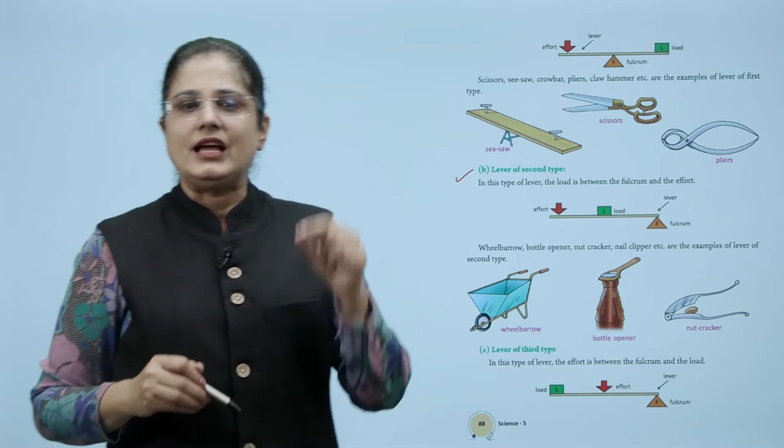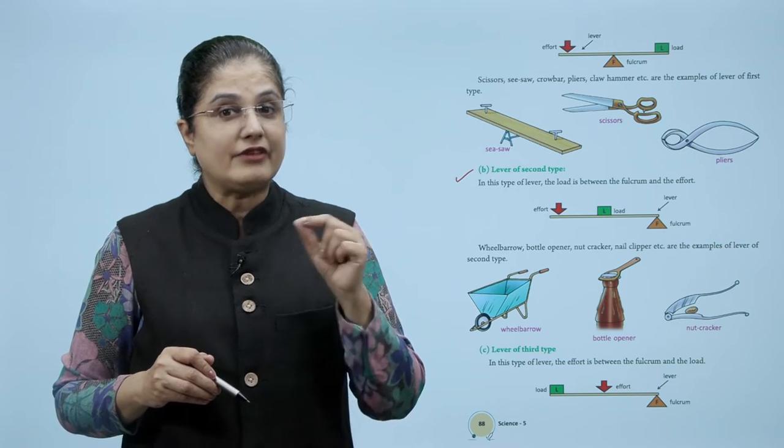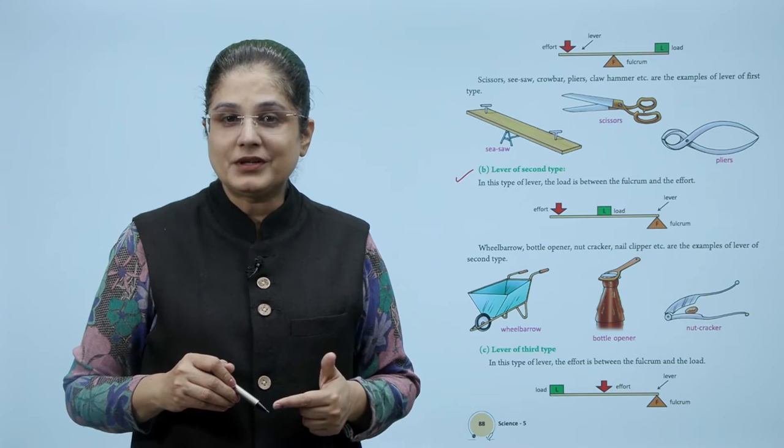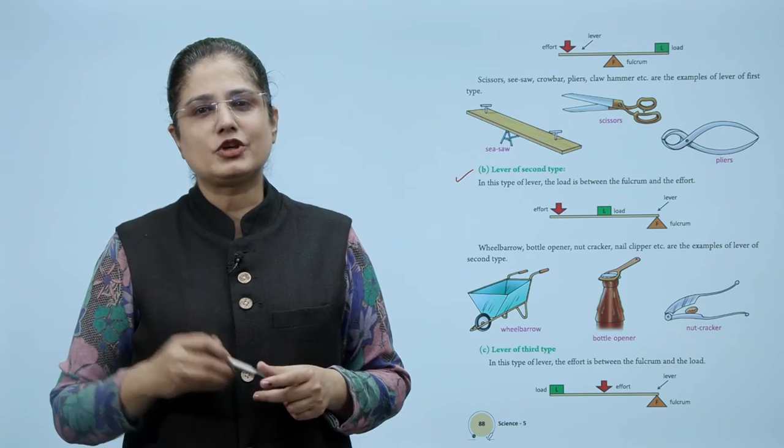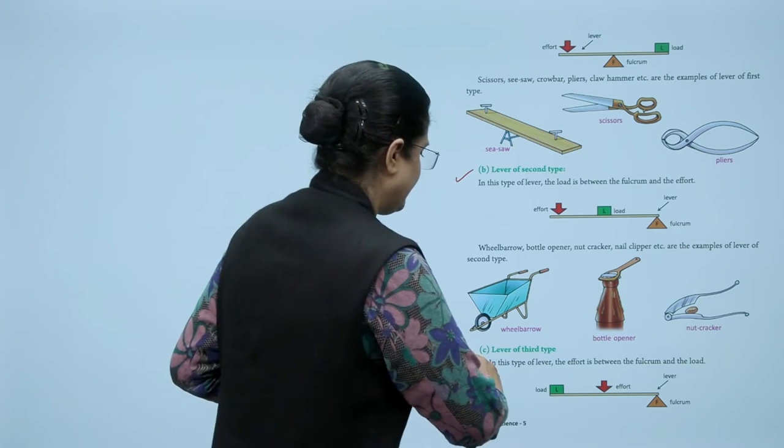Now comes the lever of the second type. In this type of lever, the load is between the fulcrum and the effort. Wheelbarrow, bottle opener, nutcracker, and nail clipper are examples of levers of the second type.